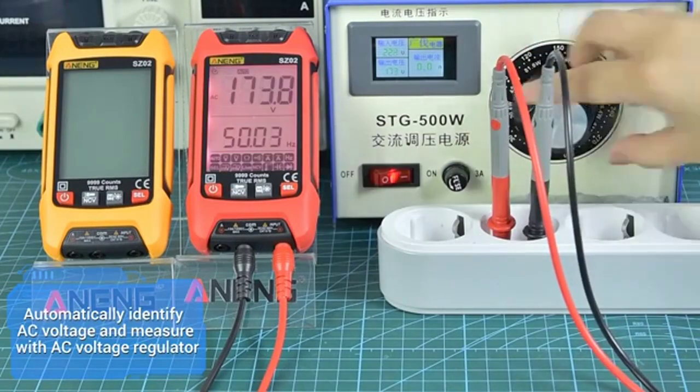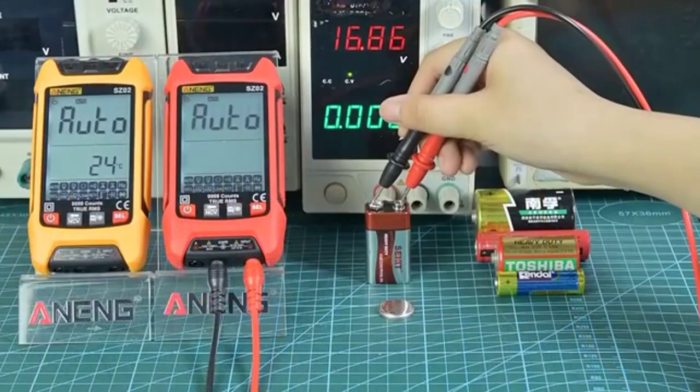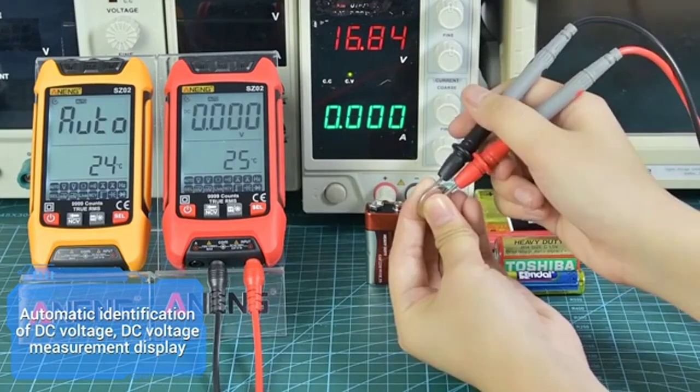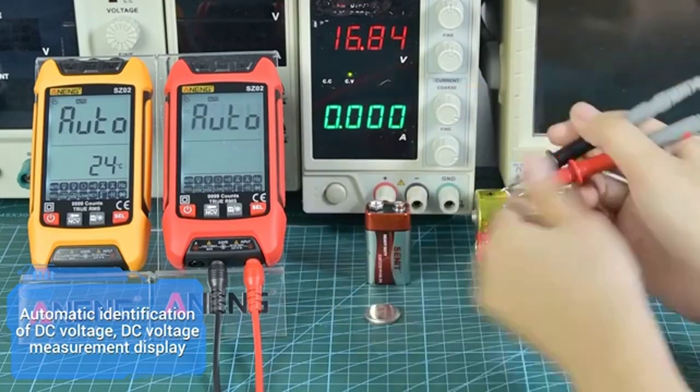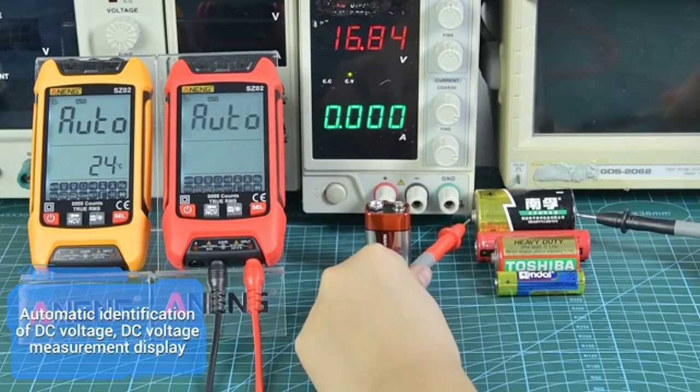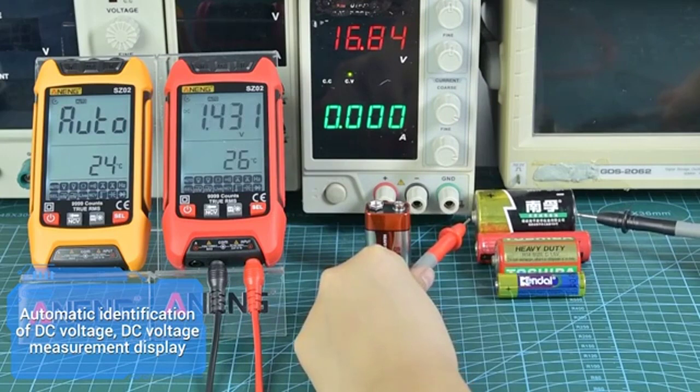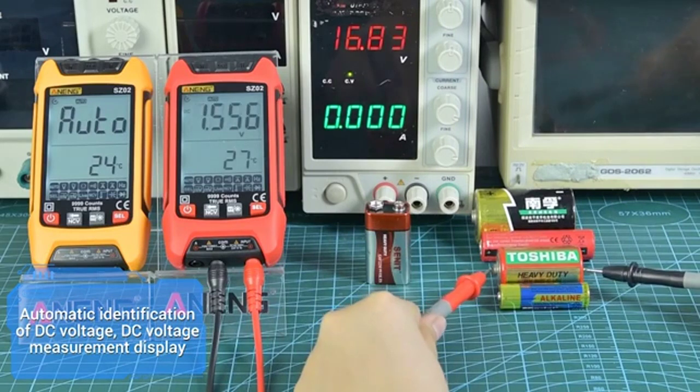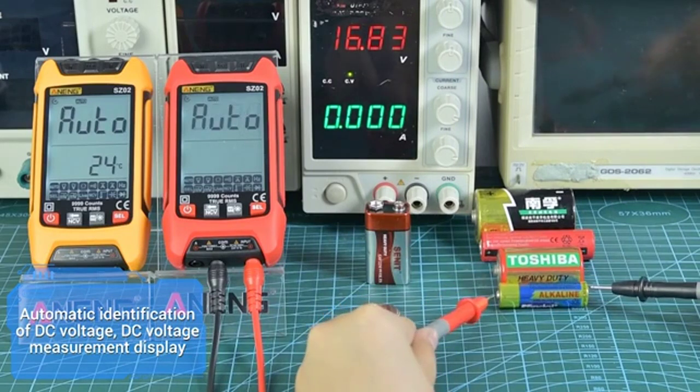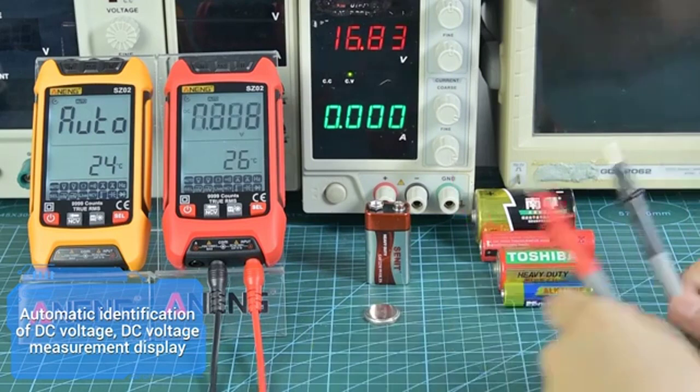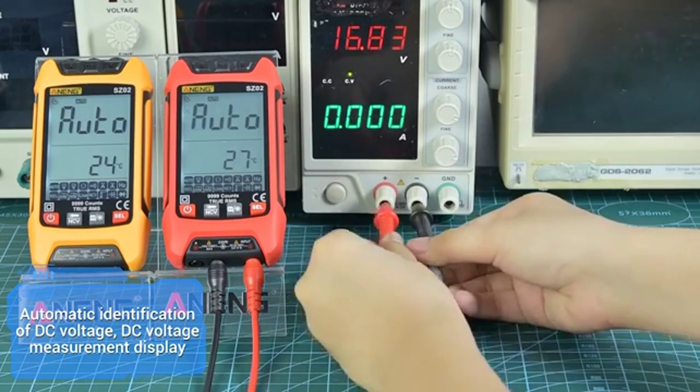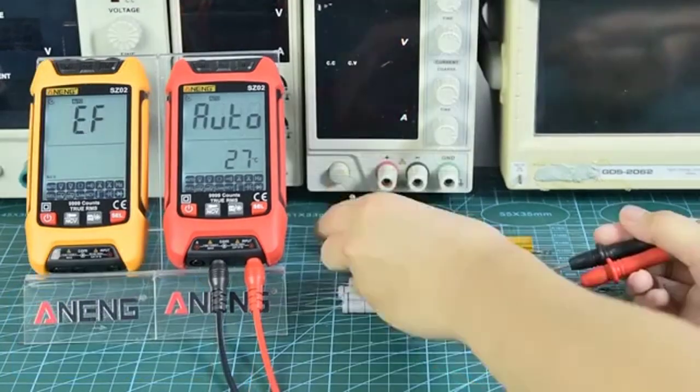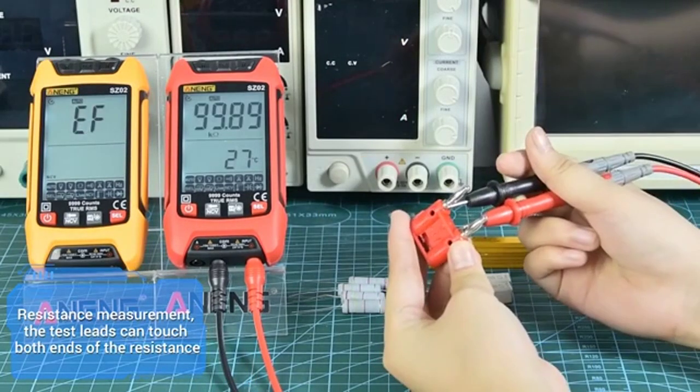Measure with the AC voltage regulator using automatic identification. For DC voltage measurement, the display shows automatic identification of DC voltage. For resistance measurement, the test leads can be measured by touching both ends of the resistance.